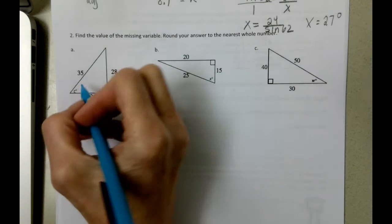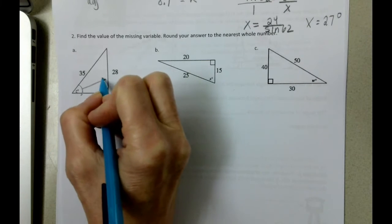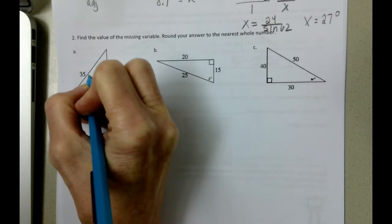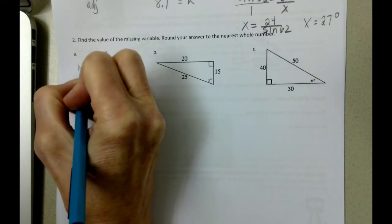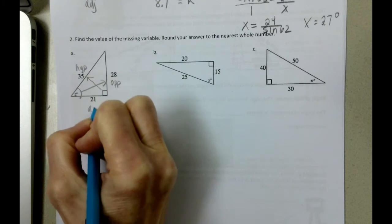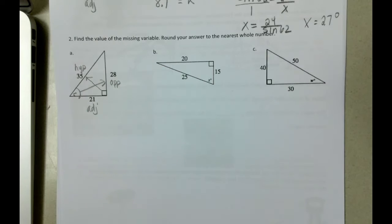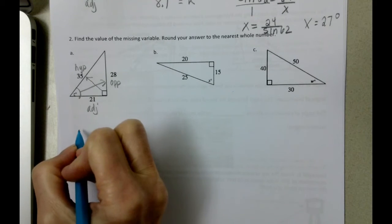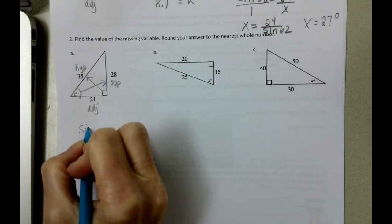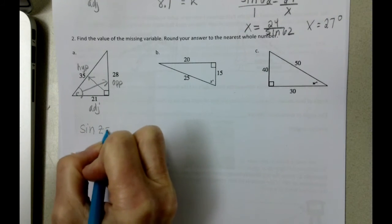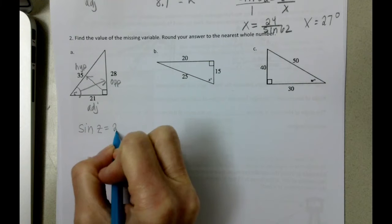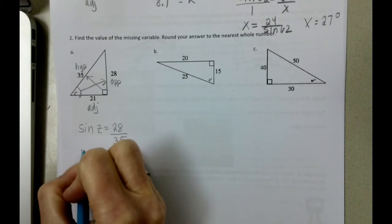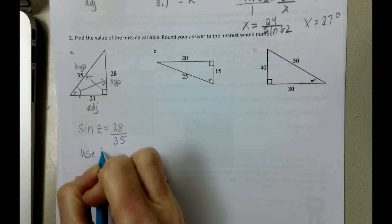So again, here's our angle. If we go across, here's the opposite. Go across from the right angle, here's our hypotenuse, and then we're left with the adjacent. I'm just going to start with sine. You can use any trig function here. This is sine of Z equals the opposite, which is 28, divided by the hypotenuse. You have to use the inverse button.